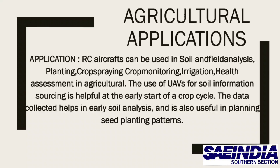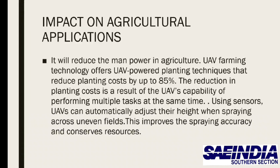The impact on agricultural applications includes a reduction in manpower. UAV farming technology offers UAV-powered planting techniques that reduce planting costs by up to 85%. This reduction in planting costs is a result of the UAV's capability of performing multiple tasks at the same time. Using sensors, UAVs can automatically adjust their height when spraying across uneven fields.